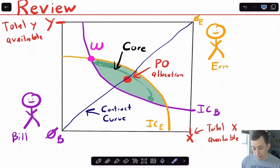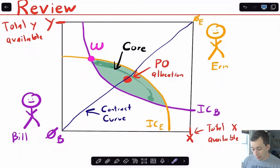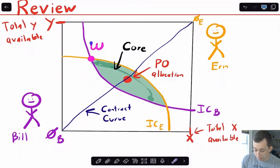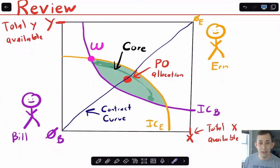I'm going to do a quick review of the Edgeworth box — if you've seen this before, timestamps are below to jump ahead. With an Edgeworth box we've got two people, Bill and Aaron, trading with each other where they're trading two goods. Each person has an indifference curve through the endowment W, shown right here, and of course we have a contract curve which lays out all the Pareto optimal allocations for these two goods for these two people.